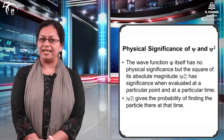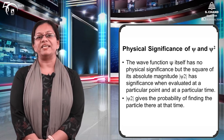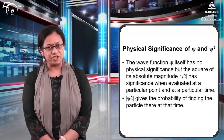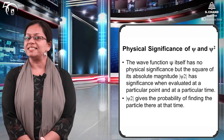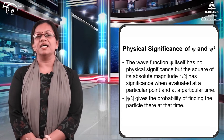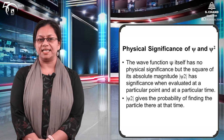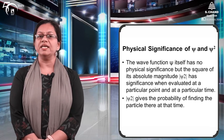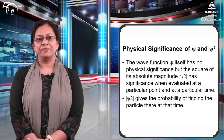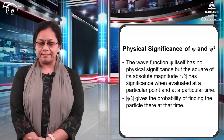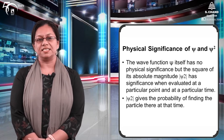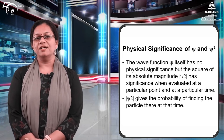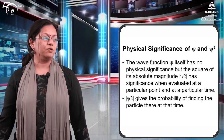What exactly is chi? Chi itself has no physical significance. Lekin agar ham chi square ki absolute value ko consider karein, then that gives us the probability of finding the electron in a particular space at that particular time. Kisi bhi particle ki probability ek jagah par hone ki, usko hum chi square se calculate karte hai.